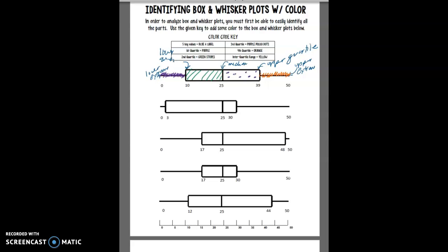And then it says the interquartile range. So the interquartile range is just the box. Should be yellow. So this entire box is going to be yellow. And that's what your box and whisker plots should look like on this page.